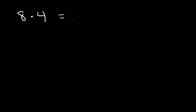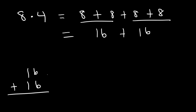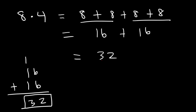Try this example: what is 8 times 4? You can use the multiplication tables or the technique you just saw. To find the answer, let's add 8 four times. 8 plus 8 is 16, and the other two 8s also give 16. 16 plus 16 is 32, so 8 times 4 is 32.